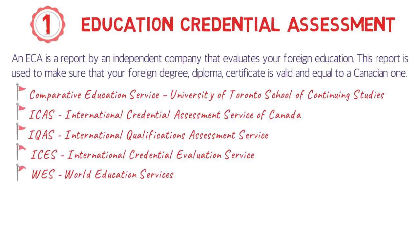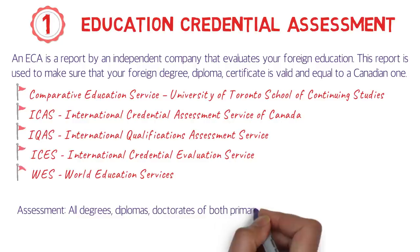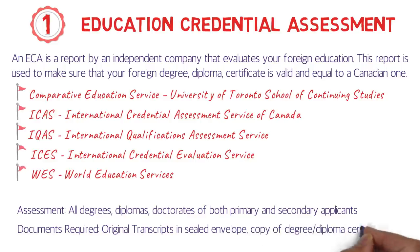The assessment is done for all degrees, diplomas, and doctorates of both primary and secondary applicants. If you are applying with your spouse, ECA needs to be done for both of you — there will be two separate applications. The documents required are the original transcript in a sealed envelope and a copy of the degree or diploma certificate.